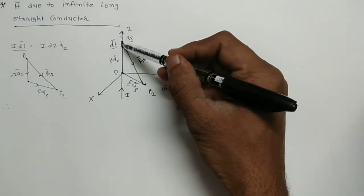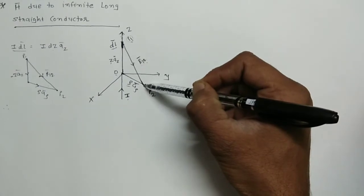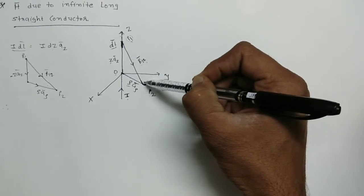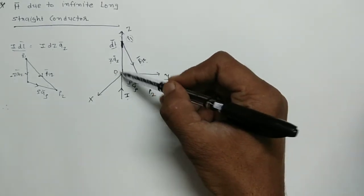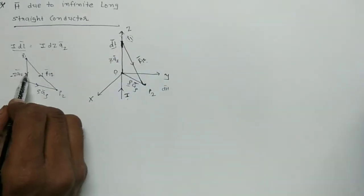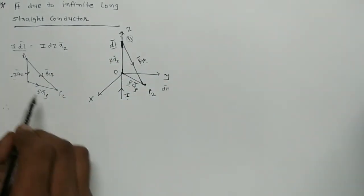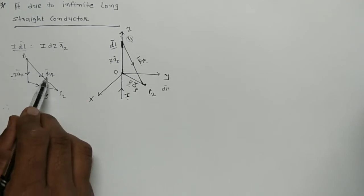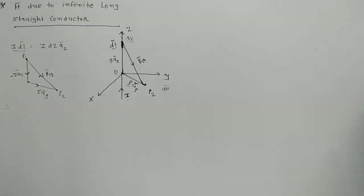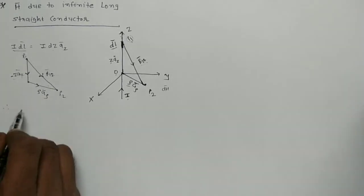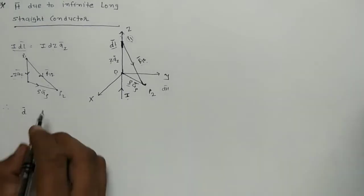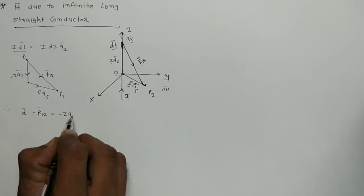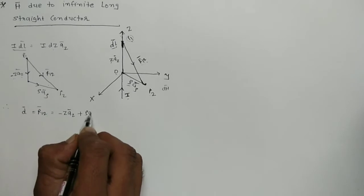The vector summation of -ZÂZ and ρÂρ gives the vector distance between point P1 and P2. Here ZÂZ is in the positive direction but I am taking it negative, so that is -ZÂZ. The vector distance D̄, also indicated as R12 bar, equals -ZÂZ + ρÂρ.